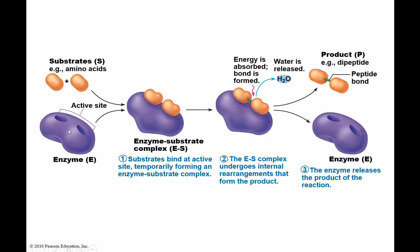Here's our enzyme with its active site, where it binds its substrates. When the substrates bind, we have the enzyme-substrate complex — a temporary joining that keeps the molecules in the proper position for the reaction to occur. The enzyme itself may undergo temporary shape changes to facilitate the reaction, then the product is released and the enzyme returns to its initial shape, ready to catalyze another round. Enzymes are incredibly vital — without them, pretty much nothing in our body would work properly. That is the end of the protein lecture.